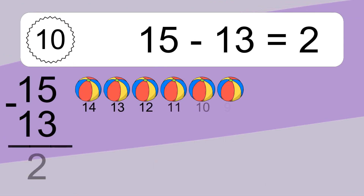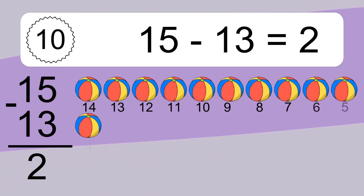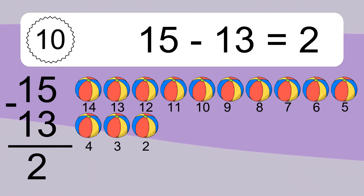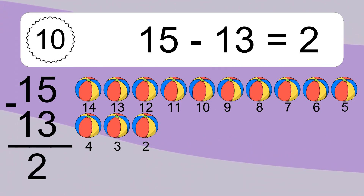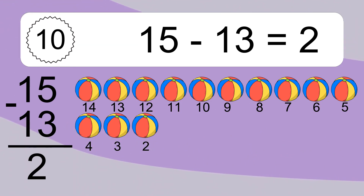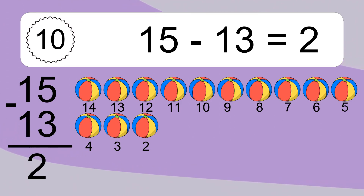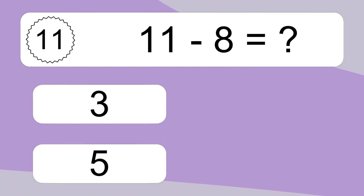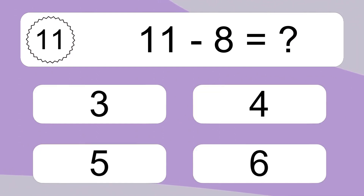15 minus 13 equals what? 15 minus 13 equals 2. Let's count it: 14, 13, 12, 11, 10, 9, 8, 7, 6, 5, 4, 3, 2.